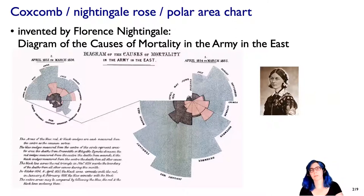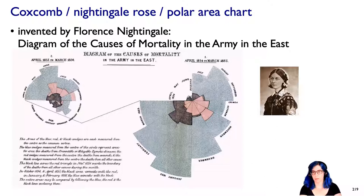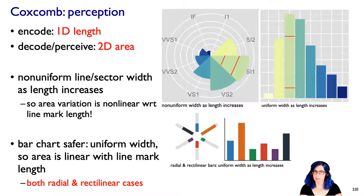Now this coxcomb plot, sometimes called a nightingale rose or a polar area chart, let's understand what's going on here, because here's where we get to the difference between what you, the designer, are trying to encode and what the user's eyes might be decoding. In a coxcomb plot, what is being encoded is these one-dimensional lengths of these wedges. But what people are often decoding is this two-dimensional area of the wedge. And here's the problem: it's non-uniform. The width of that sector, that line-style mark in the sector, that width increases as the length increases so that the variation in area is non-linear with respect to the length of the mark.